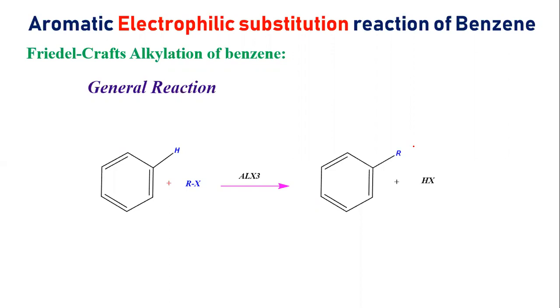Basically, Friedel-Crafts reactions are two types: Alkylation and Acylation. In Alkylation, you introduce an alkyl group in the benzene ring in the presence of Lewis Acid catalysts like AlCl3 or FeCl3. In this reaction, you introduce alkyl groups into benzene.